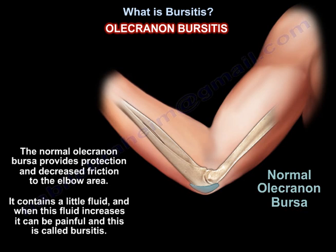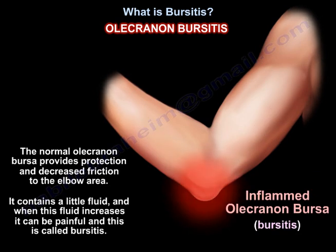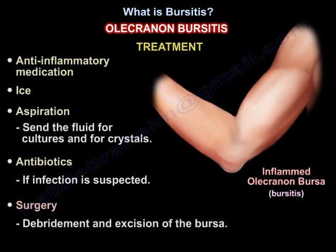The normal olecranon bursa provides protection and decreased friction to the elbow area and contains a little fluid. When the fluid increases, it can be painful — that's called bursitis. Treatment of elbow bursitis includes anti-inflammatory medication, ice, aspiration, sending the fluid for cultures and for crystals, antibiotics if infection is suspected, and surgery including debridement and excision of the bursa.